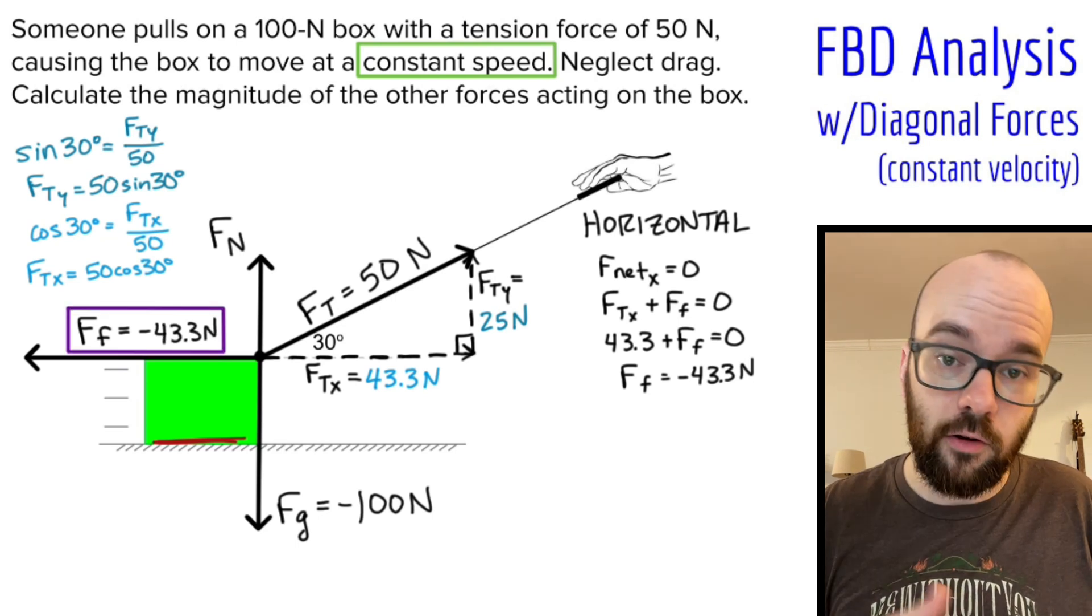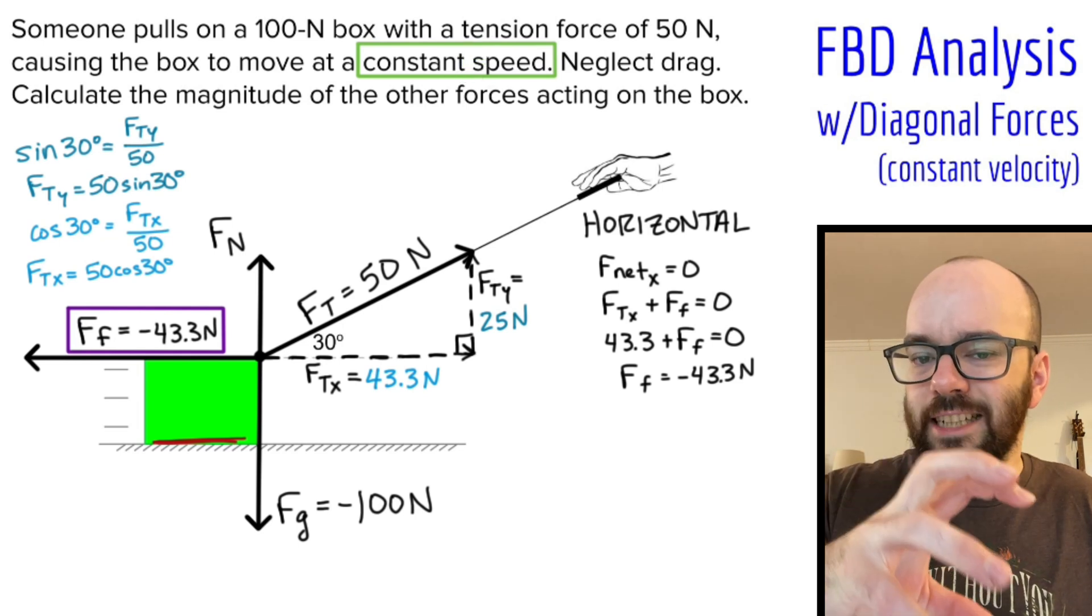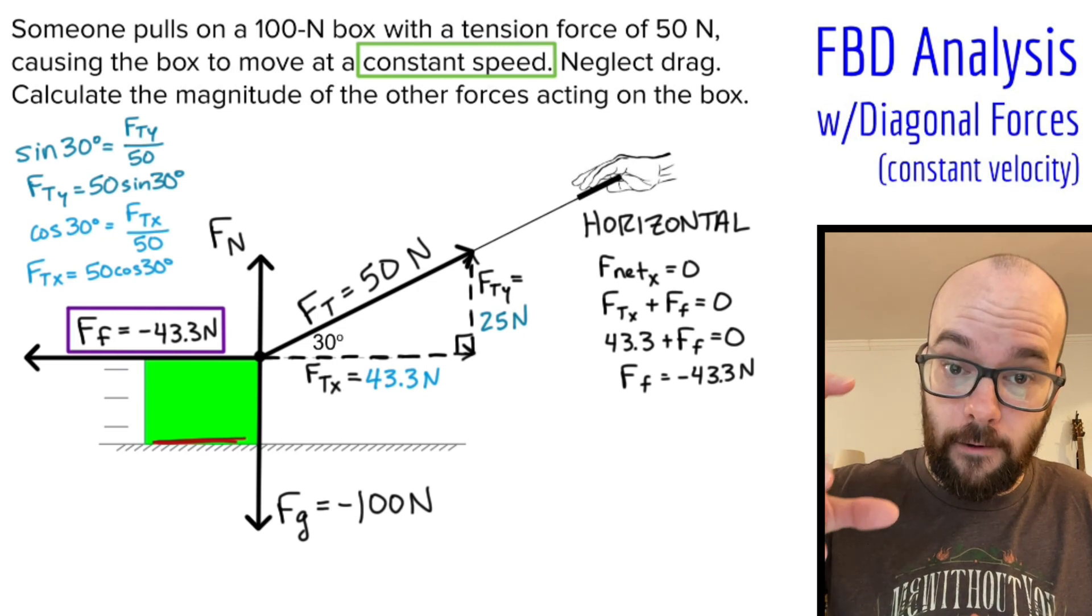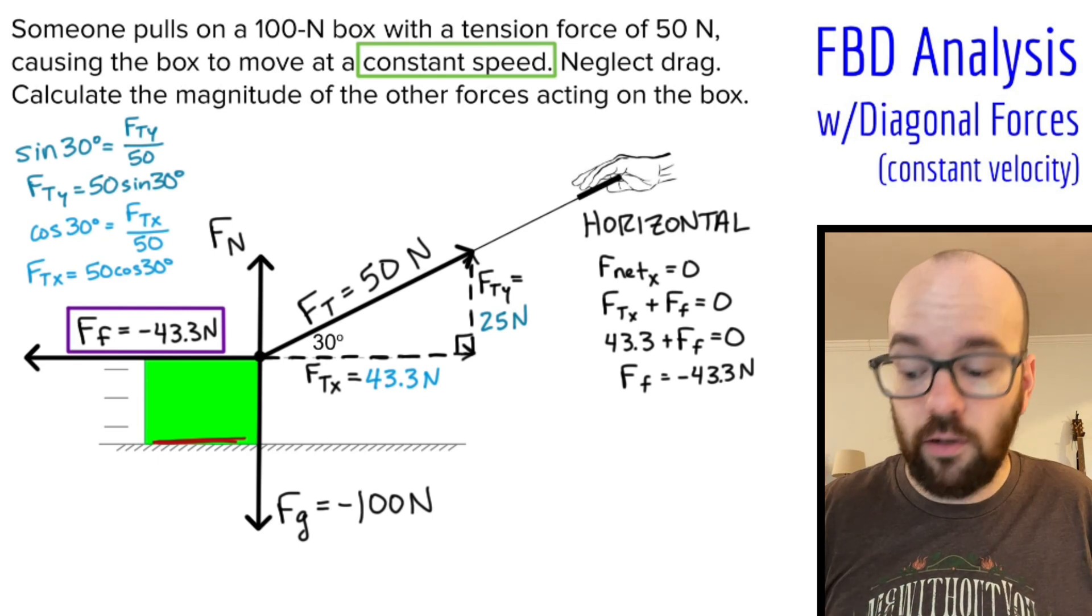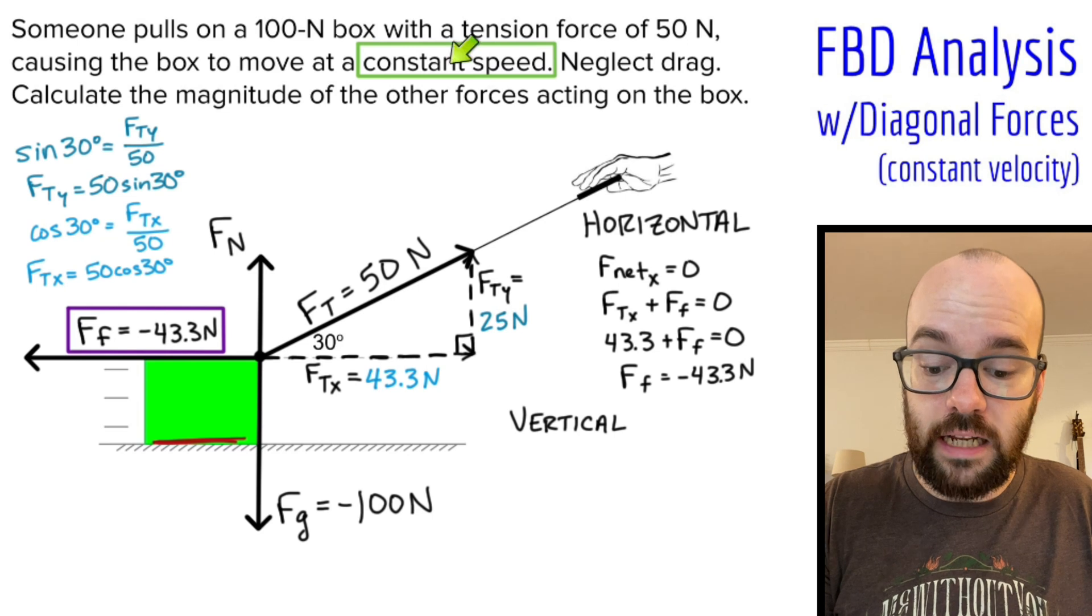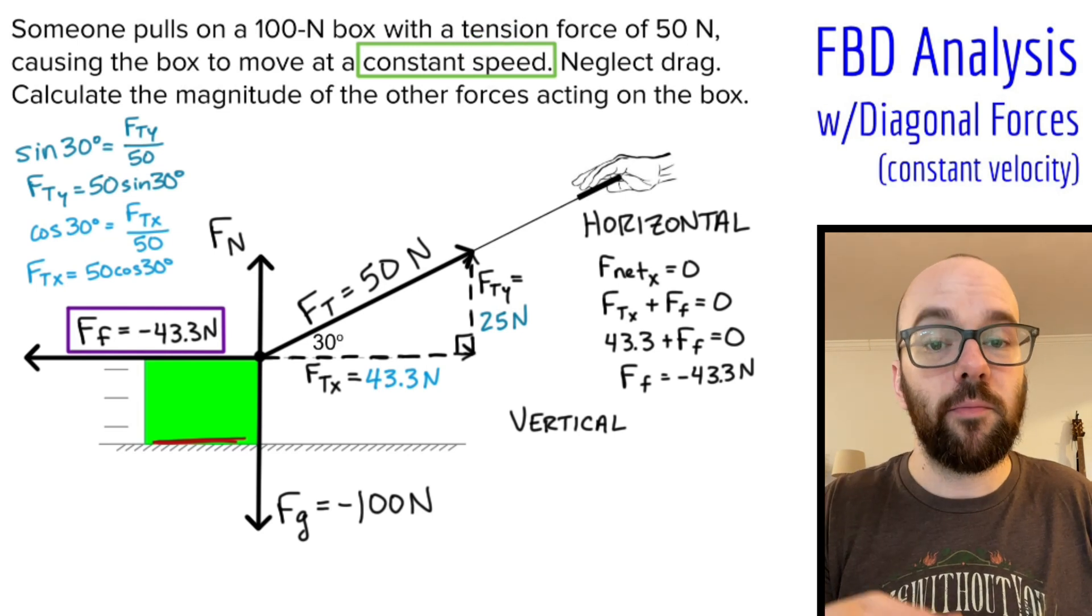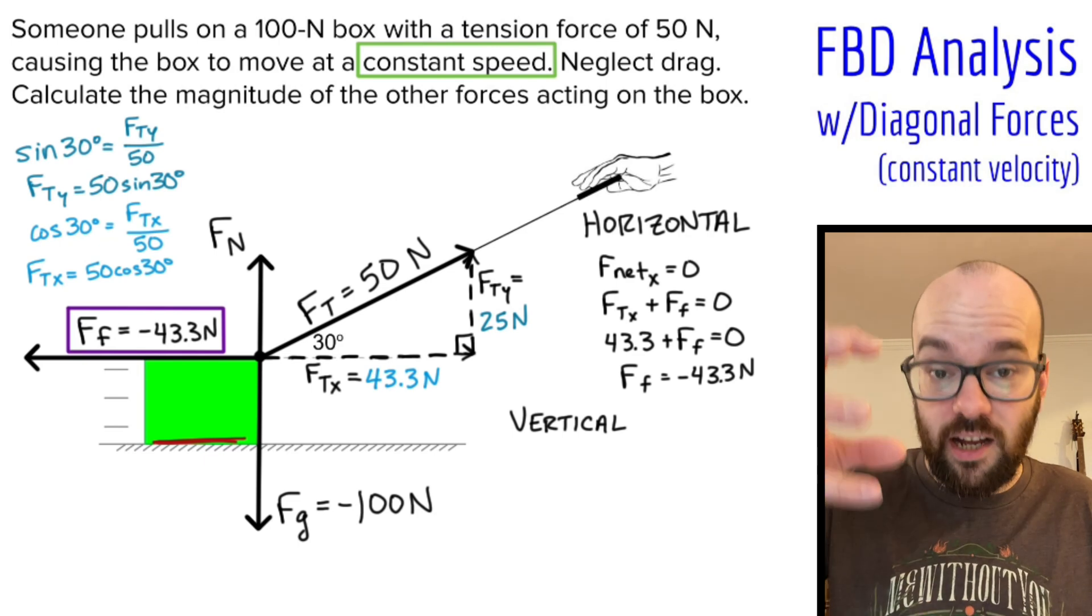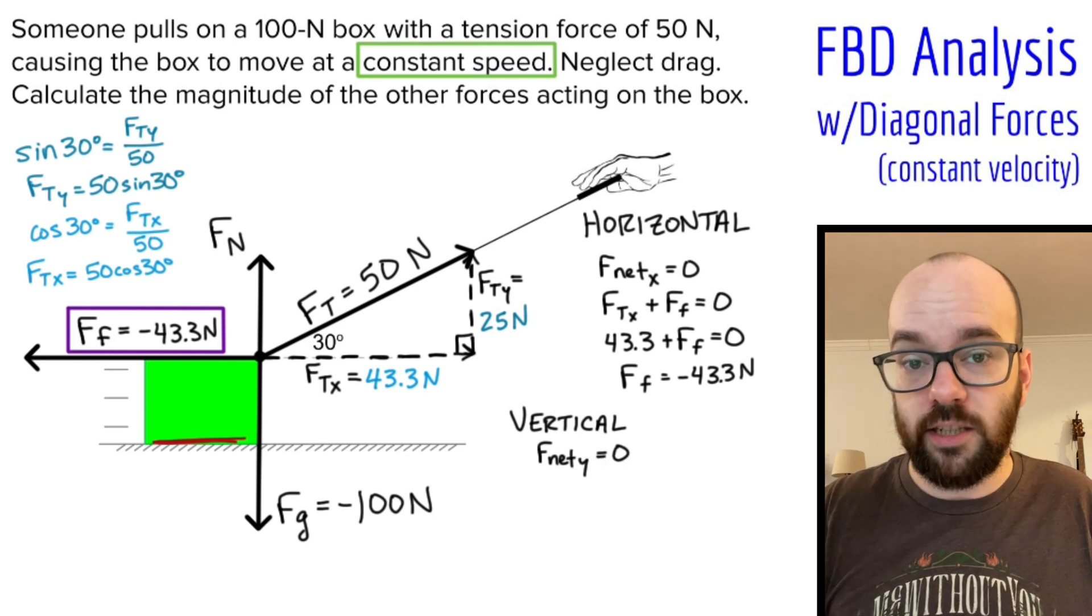Now let's take a look at the vertical forces. The box isn't lifting up off the ground. It's not moving up or down at all. So there's a constant velocity of zero vertically. Even if the speed weren't constant horizontally, the speed would be constant vertically. It'd be a constant speed of zero vertically because it's not moving up or down at all. Because there's a constant vertical speed of zero, I know that the F net in the vertical direction has to be zero, and therefore all of my vertical forces have to add up to zero.